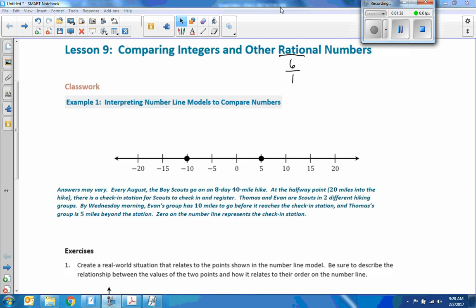Answers will vary on this. So here is an example of what you may have done. This is just an example. Every August, the Boy Scouts go on an 8-day, 40-mile hike. At the halfway point, 20 miles into the hike, there is a check-in station for scouts to check in and register. Thomas and Evan are scouts in two different hiking groups. By Wednesday morning, Evan's group has 10 miles to go before it reaches the check-in station. So they're at negative 10 miles. And Thomas' group is five miles beyond the station. So they got to the station and continued five miles further. So, zero in this case is the check-in station itself.